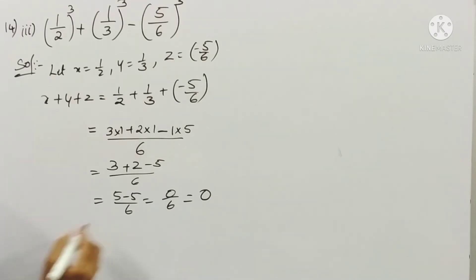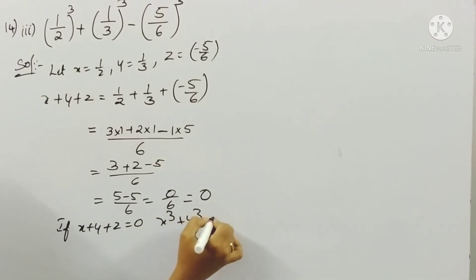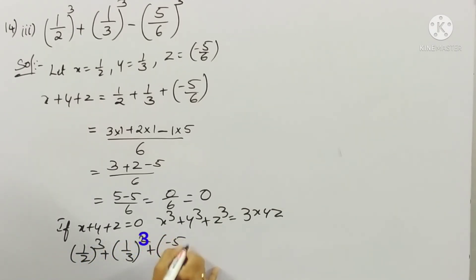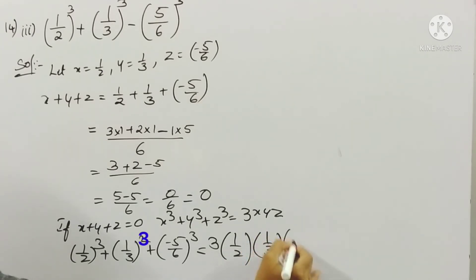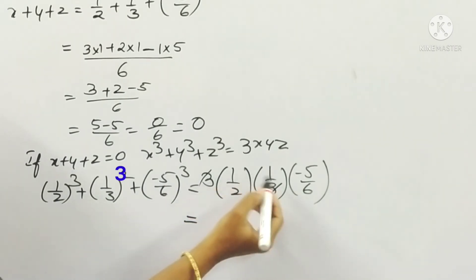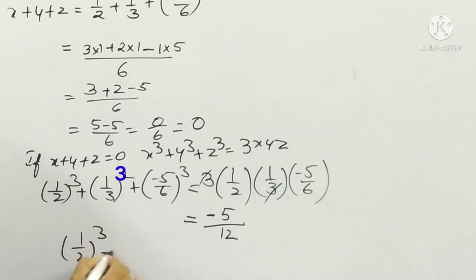Since x plus y plus z equals 0, we use x cube plus y cube plus z cube equals 3xyz. So (1/2) cube plus (1/3) cube plus (minus 5/6) cube equals 3 times (1/2) times (1/3) times (minus 5/6). The 3 and 3 cancel, giving minus 5 divided by 12 equals minus 5/12.